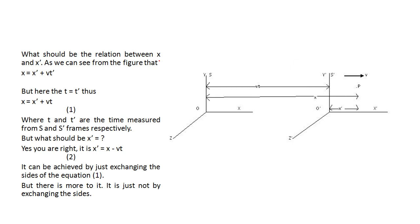What should be the relation between x and x dash? As we can see from the figure that x equals to x dash plus Vt. But here, t is equal to t dash. Therefore, we can write down that x equals to x dash plus Vt.